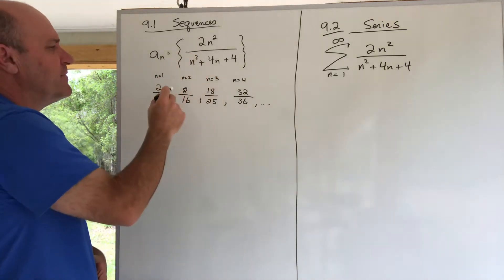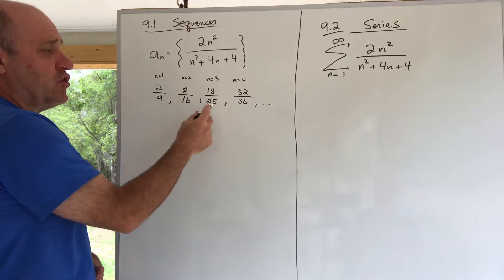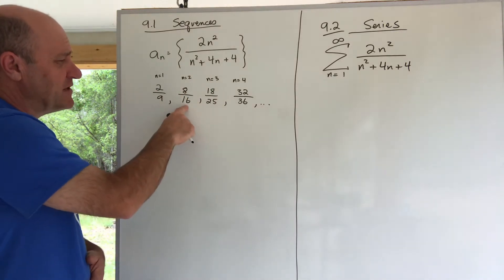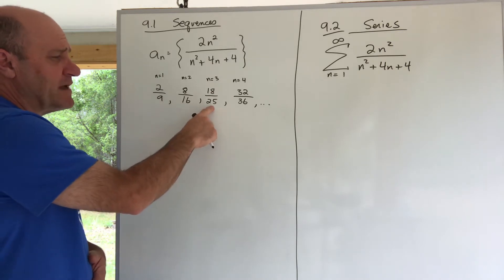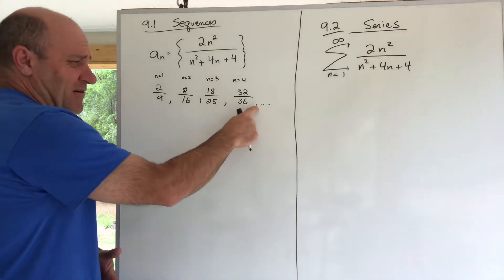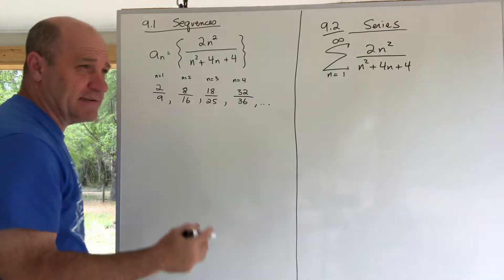I decided to plug in n = 1, n = 2, n = 3, n = 4, and so these are the terms of the sequence: 2/9, 2/16, 18/25, 32/36. I could have reduced some of these numbers, but I just plugged it in and wrote them as they were. Maybe you can tell these numbers are getting a little bigger, but it's hard to tell what they're approaching from looking at the first few terms.